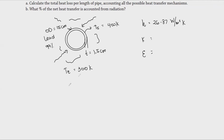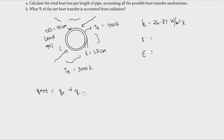The net heat transfer Q_net is equal to the heat from radiation plus conduction plus convection. Let's use Q_c for conduction, Q_h for convection, and Q_r for radiation.